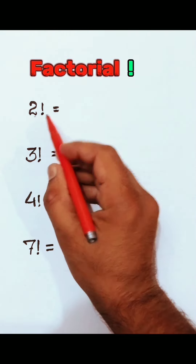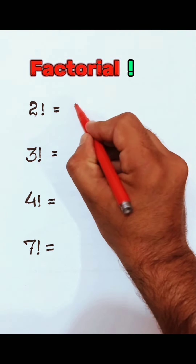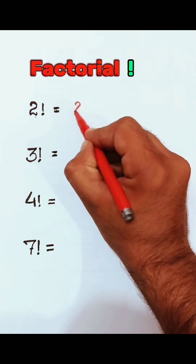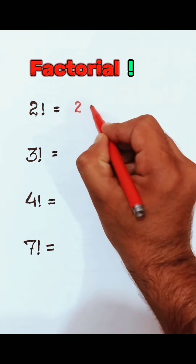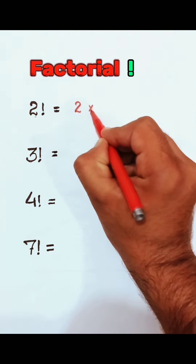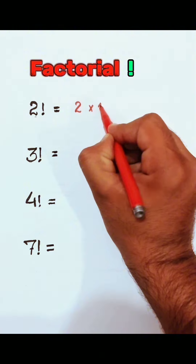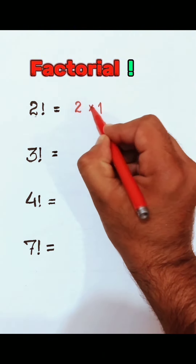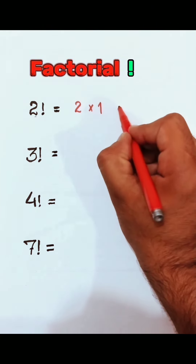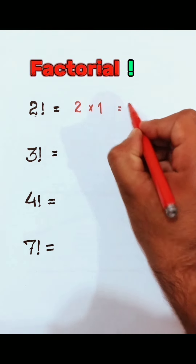2 factorial — this is the notation of factorial. 2 factorial means 2 multiply 1. 2 times 1 equals 2.